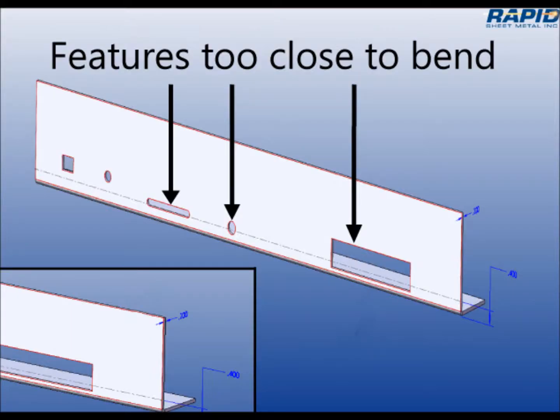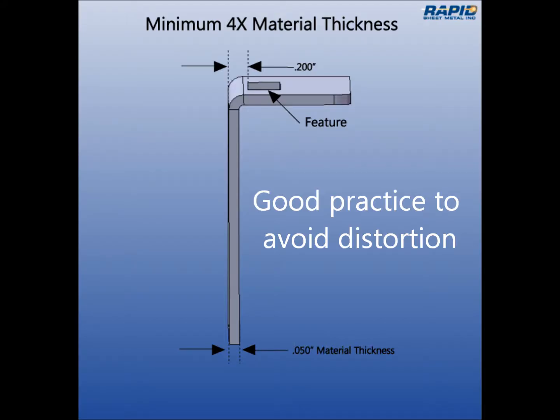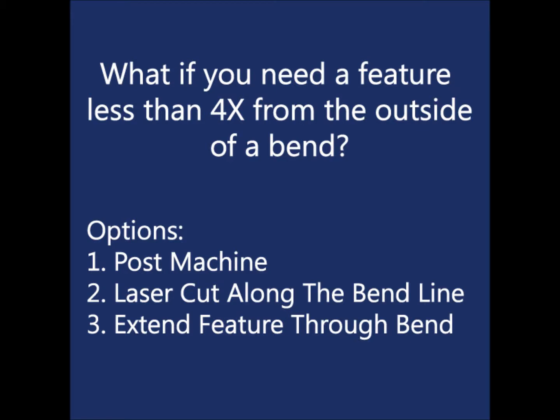Here you can see some features close to the bend and others located away from the bend. The rule of thumb to avoid feature distortion is that features should be a minimum of four times the material thickness away from the outside of the bend. Sometimes, though, a feature needs to be closer to the bend than good practice calls for.